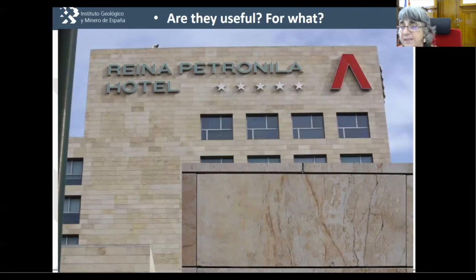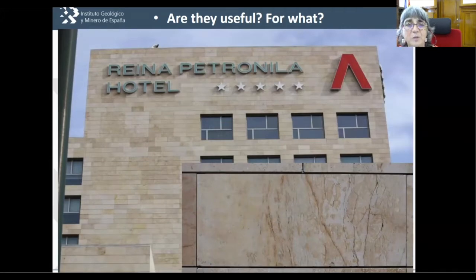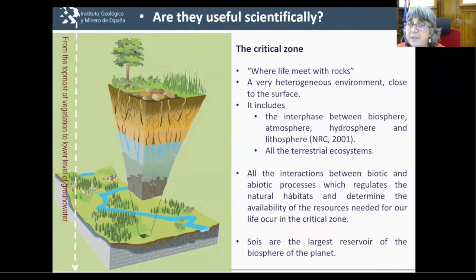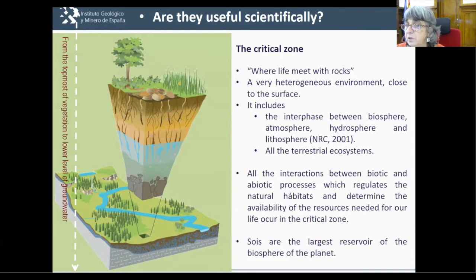They are also useful for construction — these are palustrine carbonates in Teruel. And we are here because we are scientists and we are really interested in them scientifically. Continental carbonates form in the critical zone, which we can define as the area where life meets with rocks. It is a very heterogeneous environment close to the surface, and it includes the interface between the biosphere, atmosphere, hydrosphere, and lithosphere — everything, including all the terrestrial ecosystem.